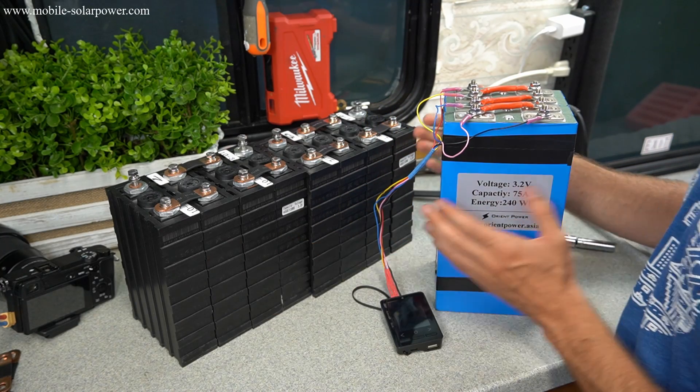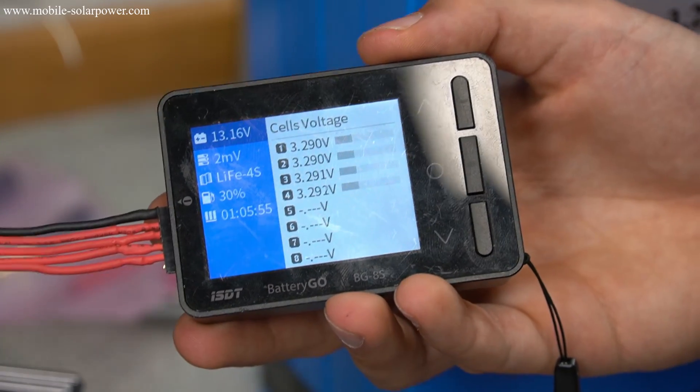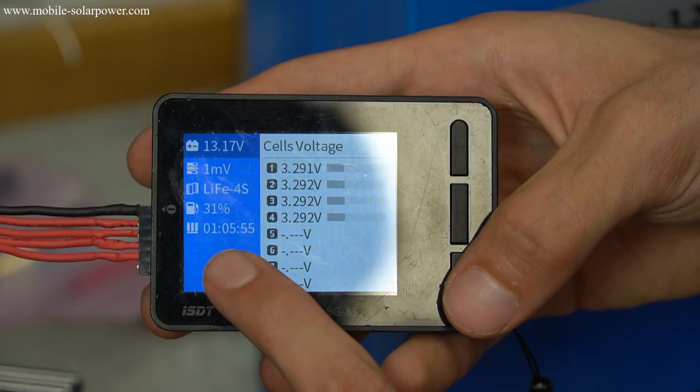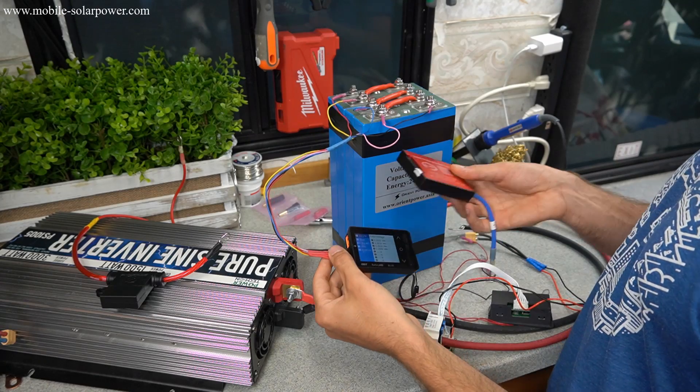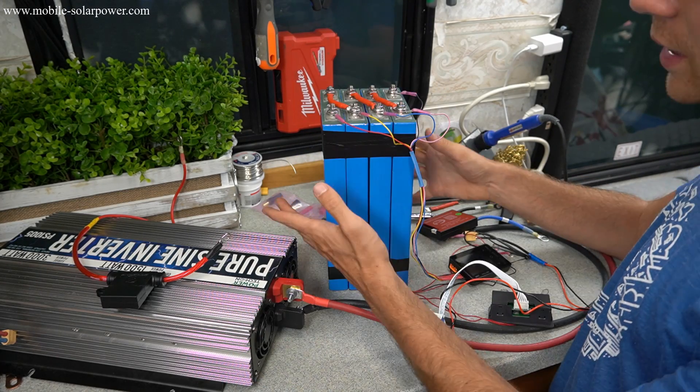All right guys, check it out. We have it within one millivolt or two millivolts of each other. It took only one hour. So now we're going to add a BMS and hook up this inverter and do a capacity test.